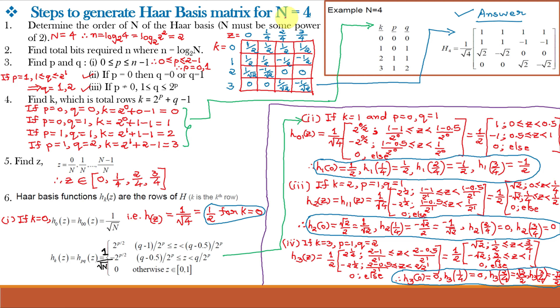These are the steps to generate the Haar basis matrix for N equal to 4. Our aim is to find a 4 by 4 matrix whose different rows are given by k and different columns are given by z. Step 1 is to determine the order of N, which is already given, so N is equal to 4.